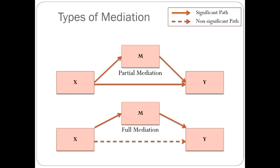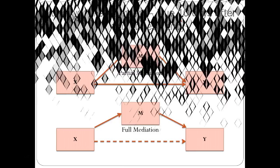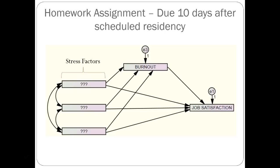The other type of mediation is called full mediation. Full mediation predicts that the direct effect of x on y will not be significant in the presence of the mediator, but that the indirect effect through the mediator will be significant. Lastly, if either the x to mediator or the mediator to y relationships are not significant, no mediation can be taking place. There are other types of mediation that are more complex than this, but I won't cover them in the simple guide to mediation.